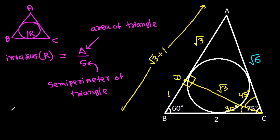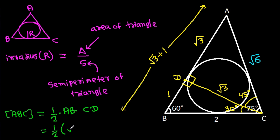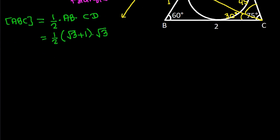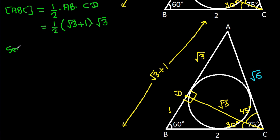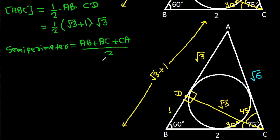The area of triangle ABC equals (1/2) × base AB × height CD = (1/2)(√3 + 1)(√3). The semi-perimeter S = (AB + BC + CA)/2 = (√3 + 1 + 2 + √6)/2.